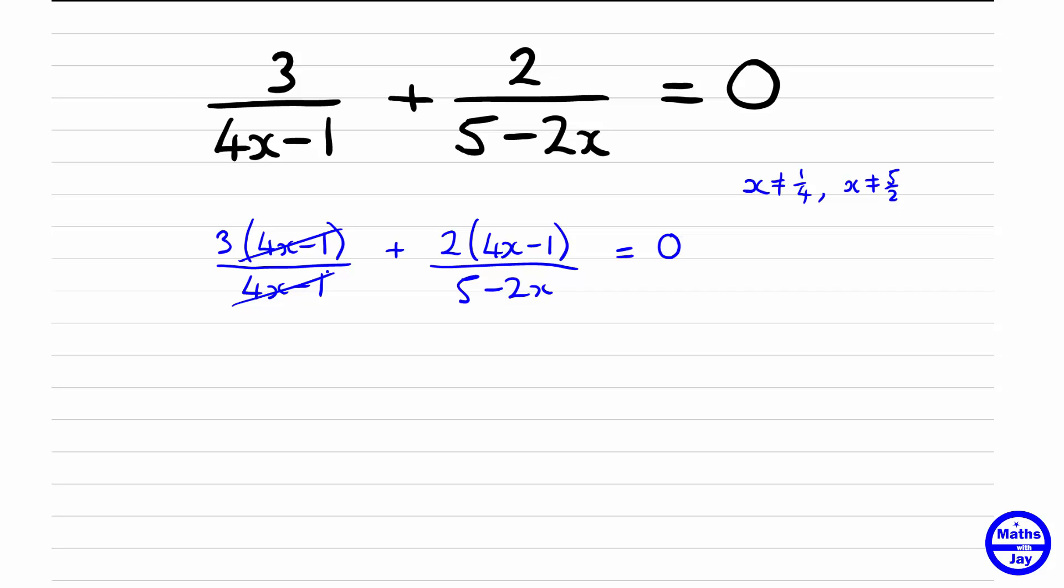Now we're going to multiply through by 5 minus 2x. So first term will be 3 times 5 minus 2x, and then the next one, this gets looking a bit long-winded but you hopefully understand what we're doing. We've multiplied that second one by 5 minus 2x, and again multiplying 5 minus 2x by the right-hand side gives us zero. And now we can cancel the 5 minus 2x.